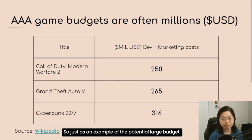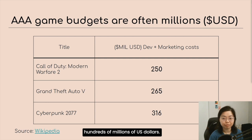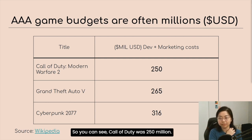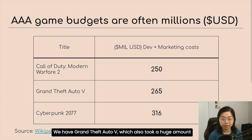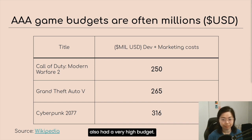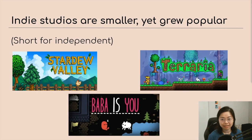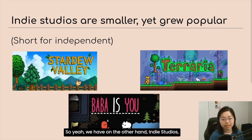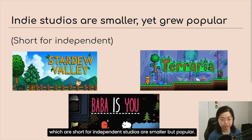The potential budgets of these AAA studios are often in the hundreds of millions of US dollars. Call of Duty was $250 million USD for development and marketing. Grand Theft Auto V also took a huge amount of funding. And of course the recent Cyberpunk 2077, which we know also had a very high budget. On the other hand, we have indie studios, which are short for independent studios — smaller but popular.